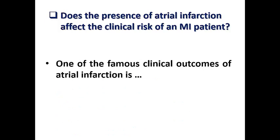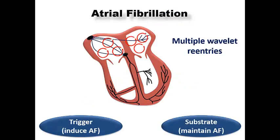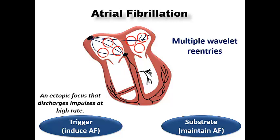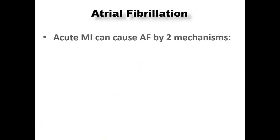A famous clinical outcome of atrial infarction is atrial fibrillation, and whenever we see AF in a patient with MI we suspect atrial infarction. AF is caused by both a trigger — such as an ectopic focus discharging impulses at high rates — and a substrate that maintains AF, such as atrial myocardium with varying conduction velocity and refractoriness resulting in multiple wavelet re-entries. So atrial fibrillation requires both a trigger and a substrate.